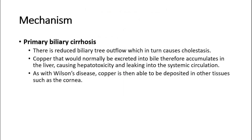Whereas in primary biliary cirrhosis, there is reduced biliary tree outflow, which in turn causes cholestasis. Copper that would normally be excreted into bile therefore accumulates in the liver, causing hepatotoxicity and leaking into the systemic circulation. As with Wilson's disease, copper is then able to be deposited in other tissues such as the cornea.